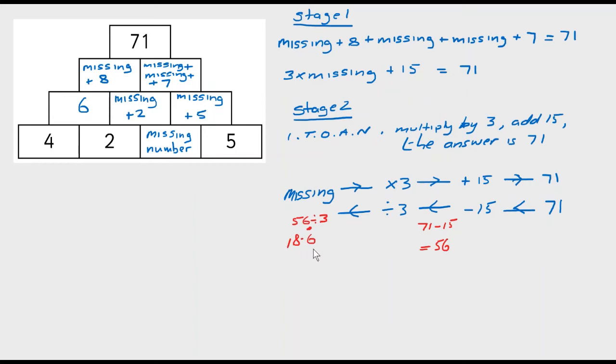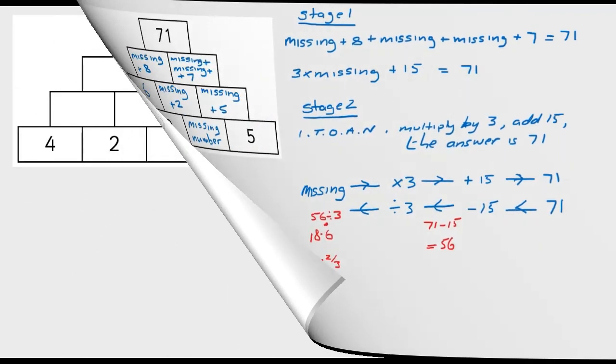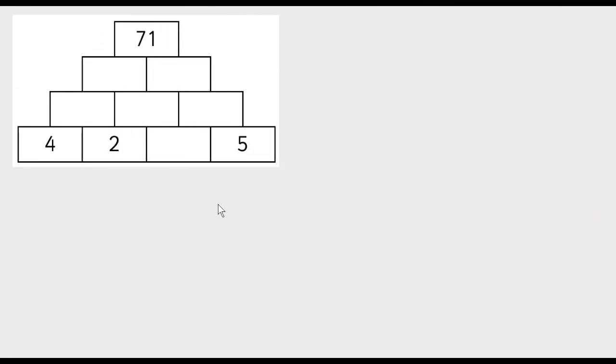So that is our missing number. Now we could write that as 18 and 2 thirds. We need to use this number, and we need to use it exactly as 18.6 recurring. So you need to use that answer button, answer facility on your calculator. The next thing we're going to do is go on to stage 3, which is to check that the answer is correct. In stage 2, we've worked out that the missing number we thought was 18.6 recurring. So we're just going to write that in here, 18.6 recurring, or 18 and 2 thirds.